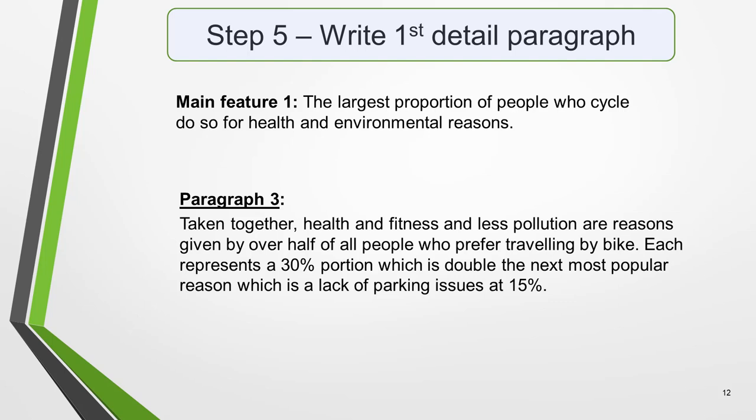Paragraphs 3 and 4 of your pie chart essay are where you include more detailed information about the data in the graphic. In paragraph 3, you should give evidence to support your first key feature. Don't forget to make comparisons where relevant. Here's our first main feature again. Main feature 1, the largest proportion of people who cycle do so for health and environmental reasons. And this is an example of what you could write. Taken together, health and fitness and less pollution are reasons given by over half of all people who prefer travelling by bike. Each represents a 30% portion, which is double the next most popular reason, which is a lack of parking issues at 15%.